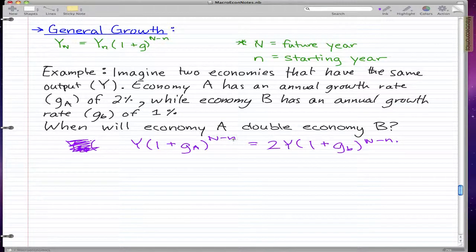And what we're looking for is N minus n, how many years it takes to double, because n is the starting year and capital N is the ending year when economy A has doubled economy B. The difference is how many years it will take for economy A to double economy B. So let's get down to it. This might be a little complicated, but you'll get through it.